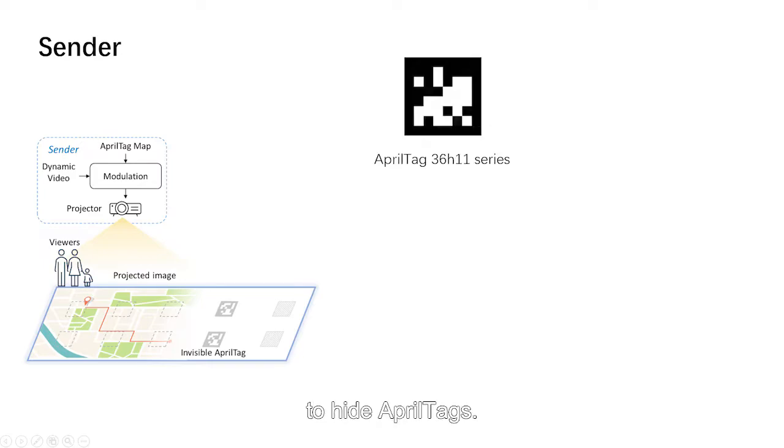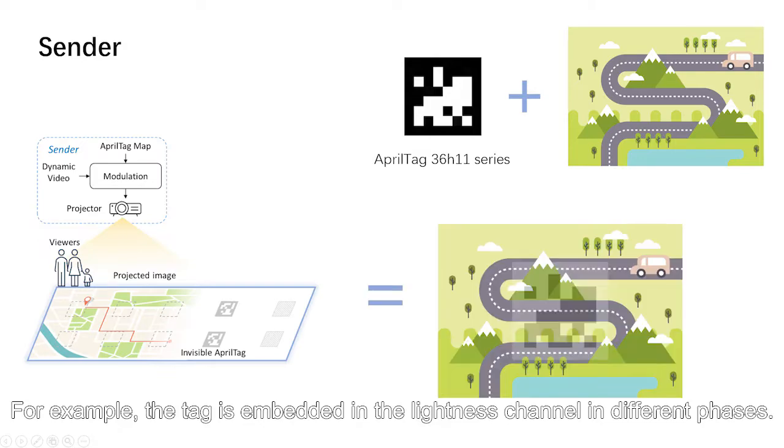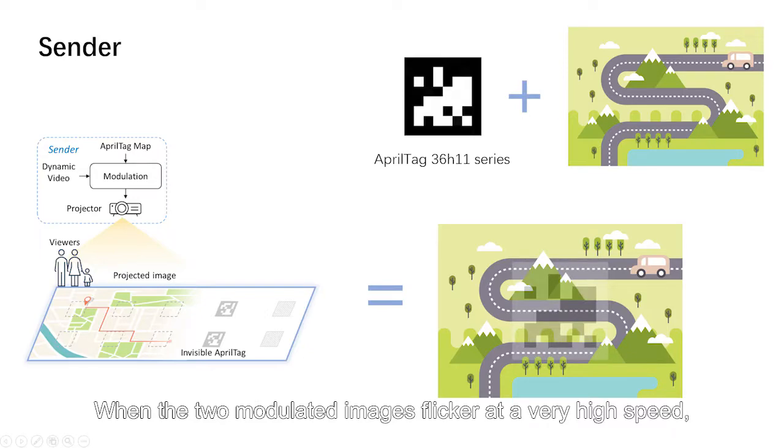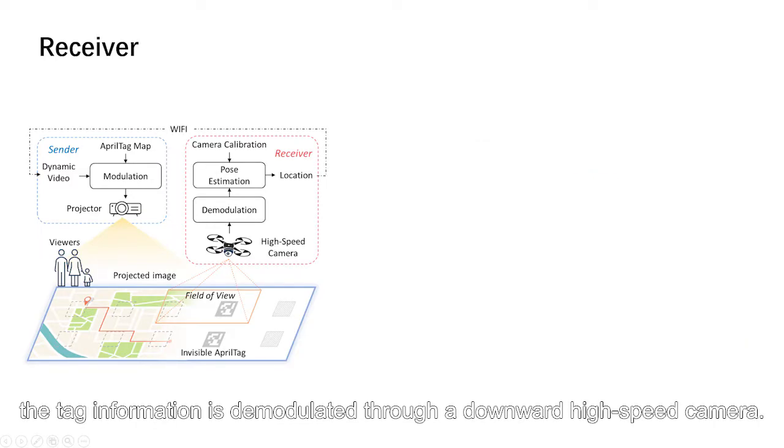For example, the tag is embedded in the lightness channel in different phases. When the two modulated images flicker at a very high speed, human eyes cannot notice this flickering.